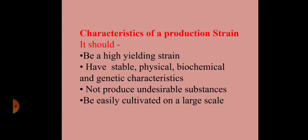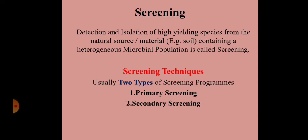What is screening, and why do we need to perform screening of microorganisms? Microorganisms required for carrying out industrial productions need to be screened and sorted out. The organism used for carrying out certain product formation is called a production strain. The production strain should be a high-yielding strain — production should be more. It should have stable physical, biochemical, and genetic characteristics. The organism should not produce any undesirable substances or toxic chemicals, and it should be easily cultivable on large scale. The desired production strain needs to be isolated from any natural source.